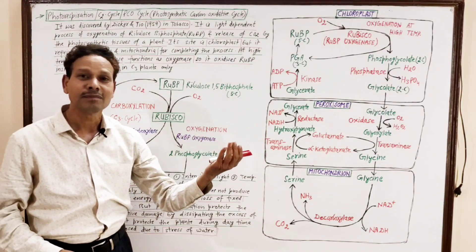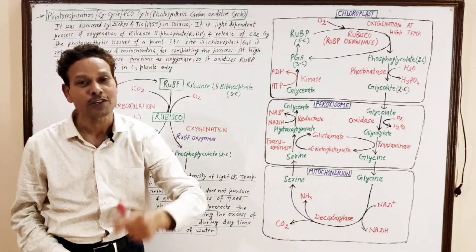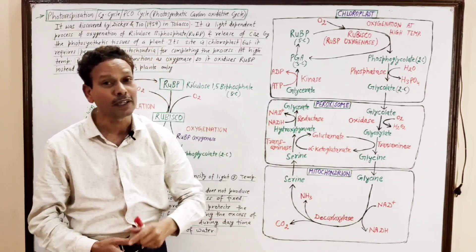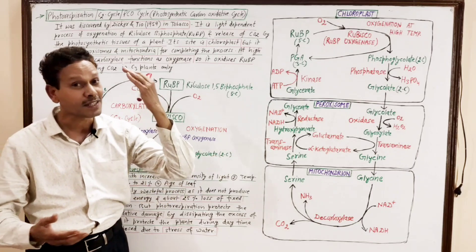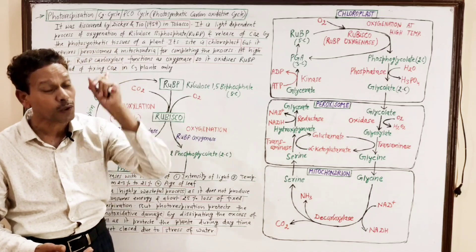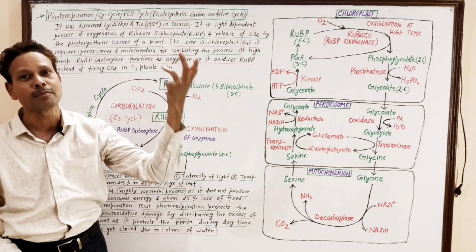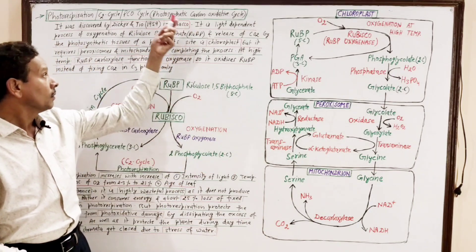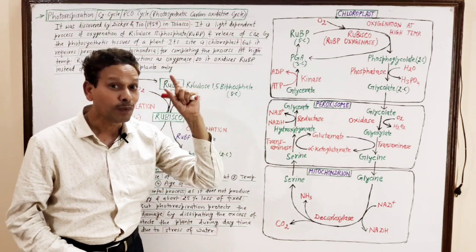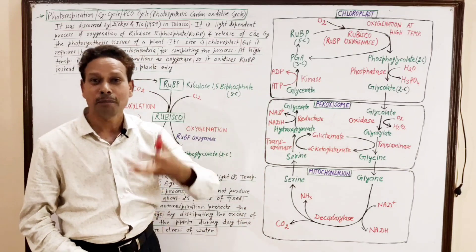This entire process — the C2 cycle, PCO cycle, or photorespiration — was discovered by Diker and Tayo in 1959 in the tobacco plant, which is a C3 plant. It is a characteristic feature of C3 plants only, because C4 plants are well adapted to tropical conditions and high temperature. It is a light-dependent process.